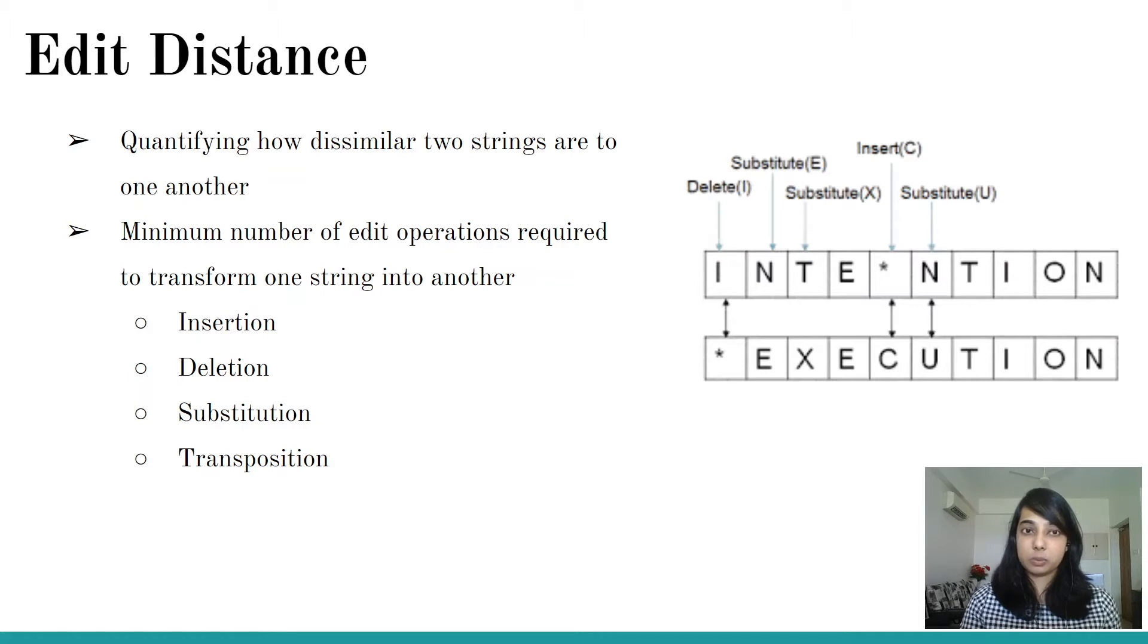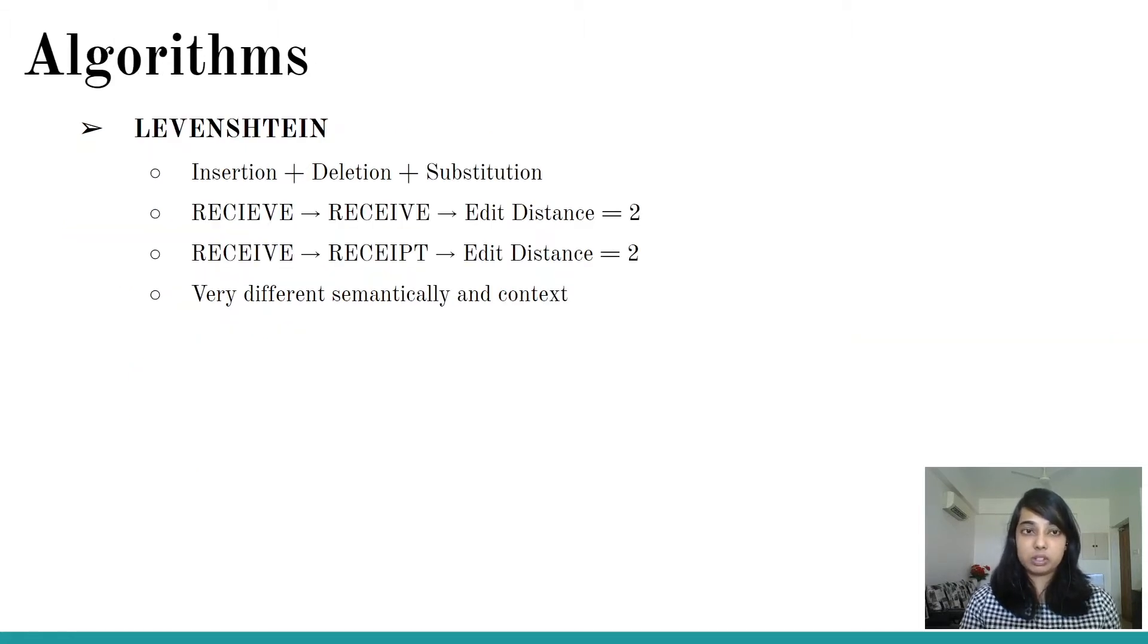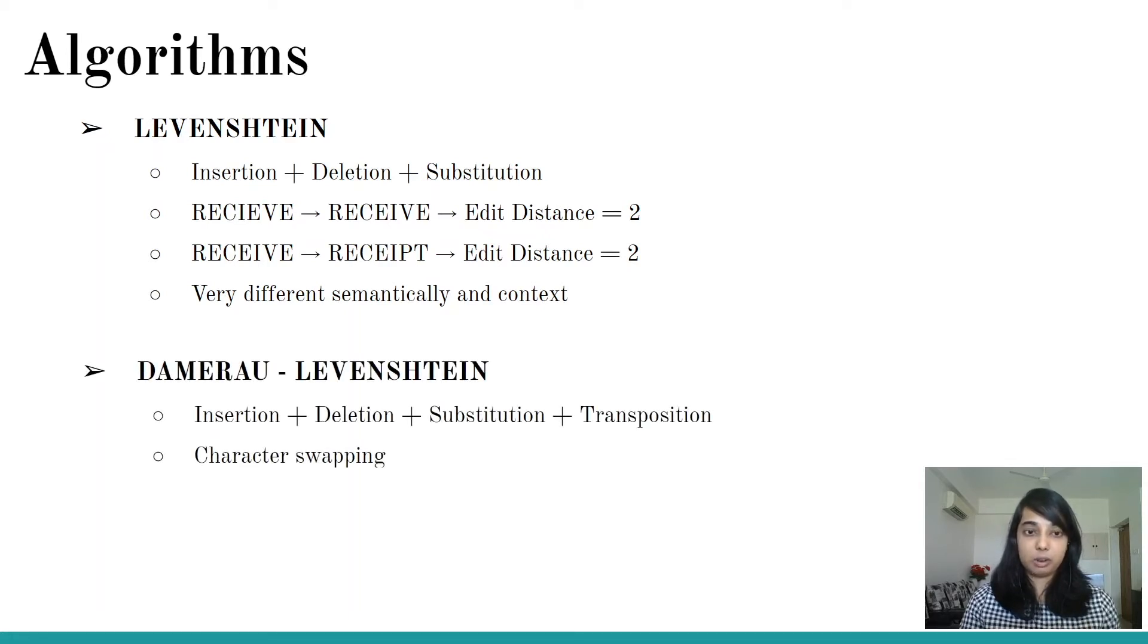The first algorithm we are going to look into today is the Levenshtein which works on insertion, deletion and substitution followed by the Damerau-Levenshtein and then the least common subsequence. The difference between the first and the second is the operation which is transposition. To take an example for the first one, you have two words which is 'receive' and 'recieve' (ie and ei). This is a very common mistake which we all make. The edit distance to convert the wrong one to the correct 'receive' is two.